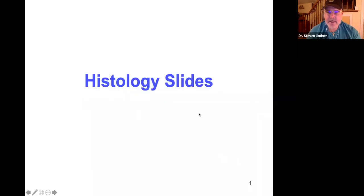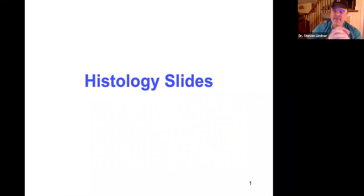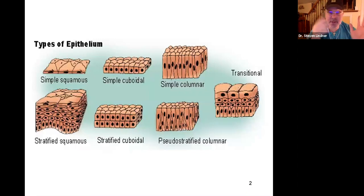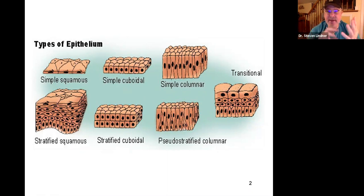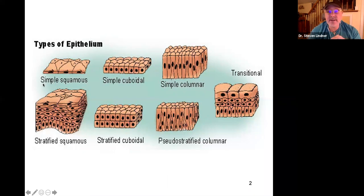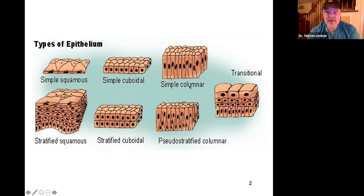We're going to be looking at some histology slides — some will be epithelium, some will be connective tissue. To identify epithelium, you need to see lots of cells packed closely together. Then determine if it's one cell layer thick or multiple layers. If the cells are flat and irregular, it's squamous; if cube shaped, it's cuboidal; if they look like tall columns, they're columnar.